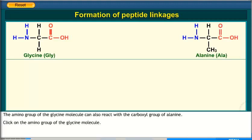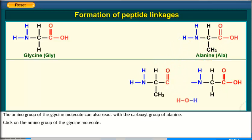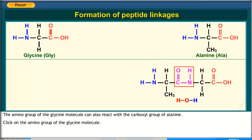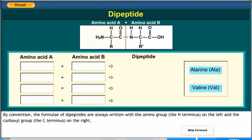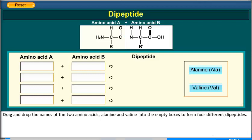The amino group of the glycine molecule can also react with the carboxyl group of alanine. By convention, the formulae of dipeptides are always written with the amino group, the N-terminus, on the left, and the carboxyl group on the right. Drag and drop the names of the two amino acids, alanine and valine, into the empty boxes to form four different dipeptides.